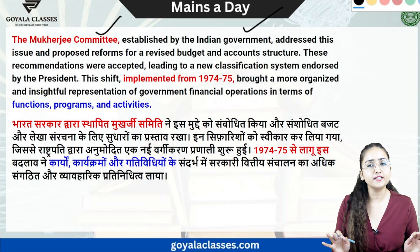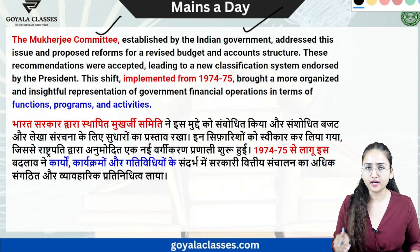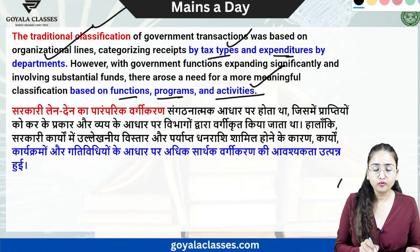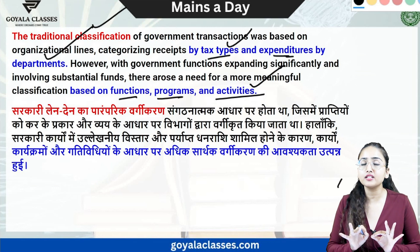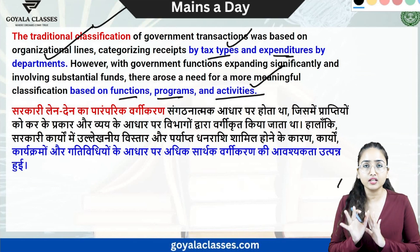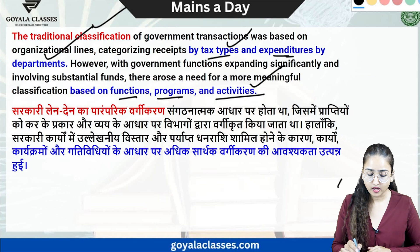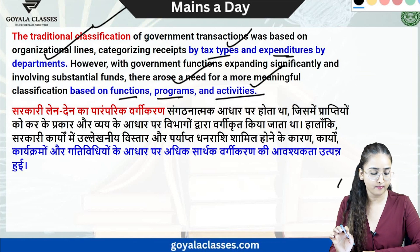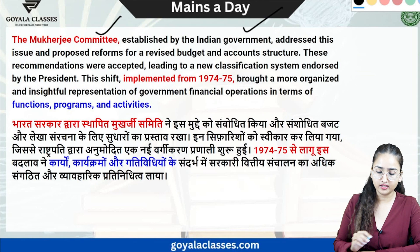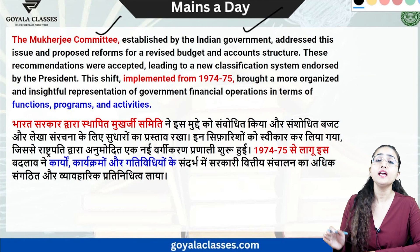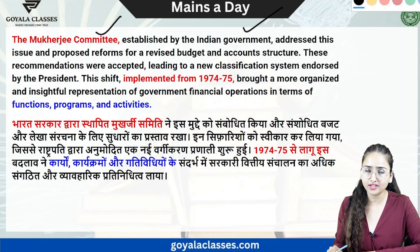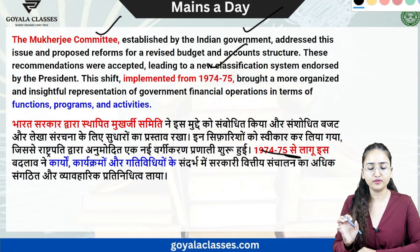The committee gave the principles on which classification should be based — function, program, and activities. The basis of expenditure and revenue should be function-based, program-based, and activities-based. These recommendations were accepted by the Government of India and the Comptroller and Auditor General in 1974–75.